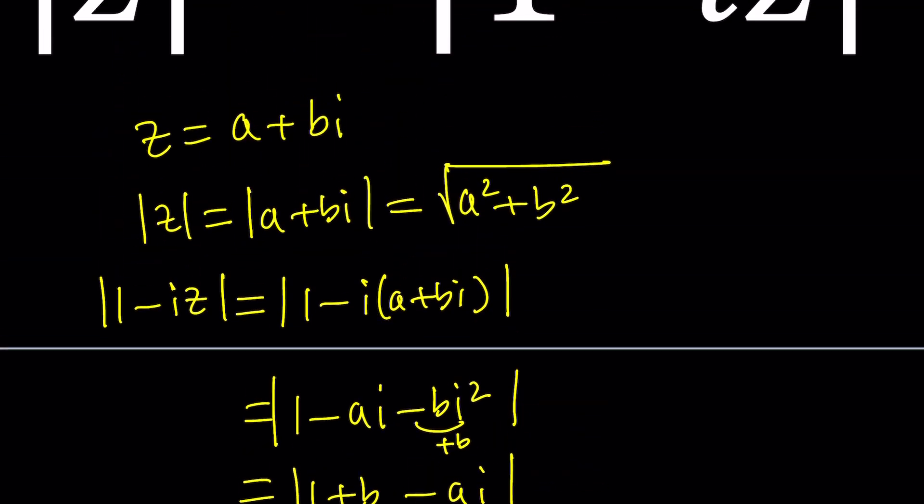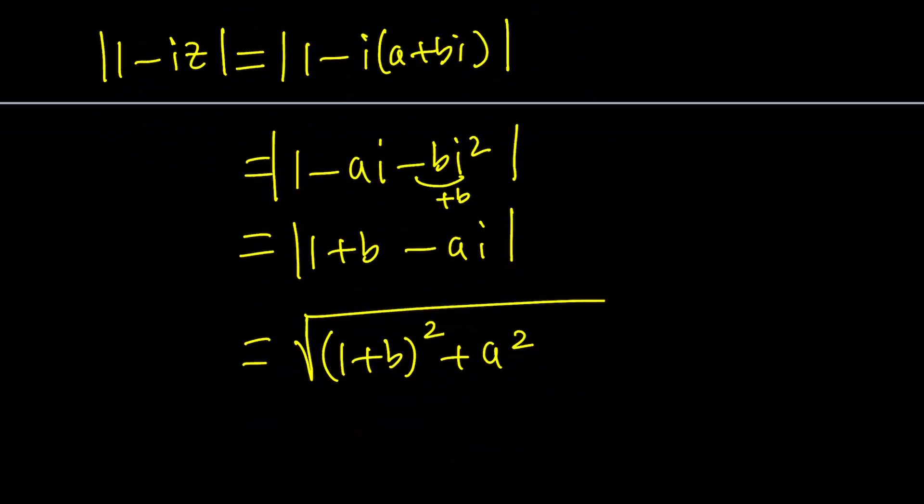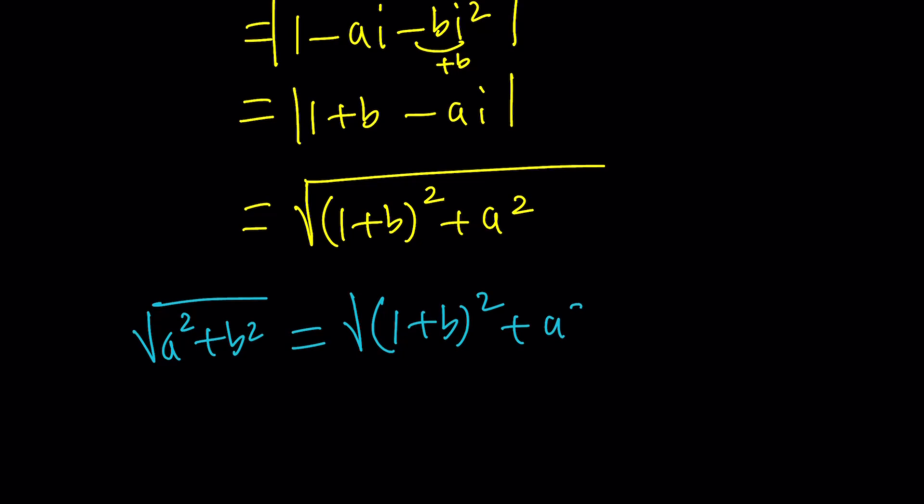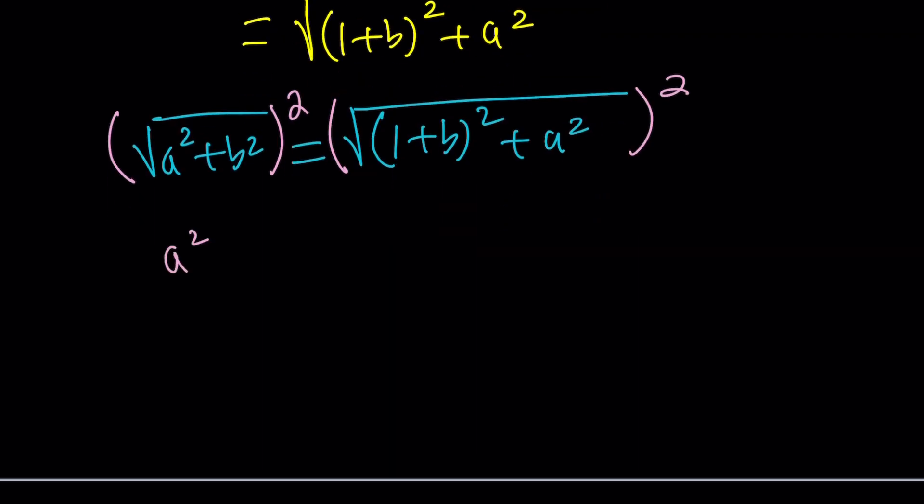Now we do have that these two absolute values are equal. So let's go ahead and set up an equality. The square root of A squared plus B squared equals the square root of (1 plus B) squared plus A squared. Now something interesting happens here because we have an equality and you see A squared and B squared on both sides. Let's go ahead and square both sides first to get rid of the radical. And then we get A squared plus B squared equals (1 plus B) squared plus A squared.